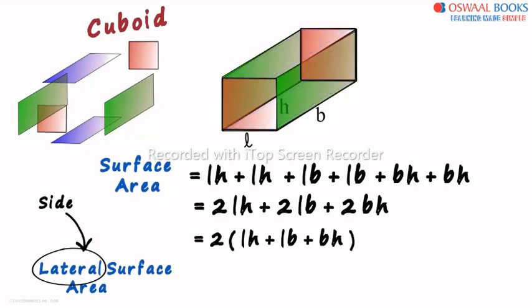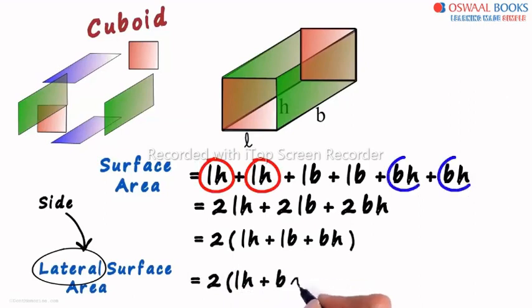The 2 green and the 2 red rectangles make up the lateral surface. The lateral surface area just equals the sum of the areas of these 4 rectangles. The sum of the green rectangles would be BH plus BH and the sum of the red rectangles will be LH plus LH. The total lateral surface area will be twice LH plus BH.